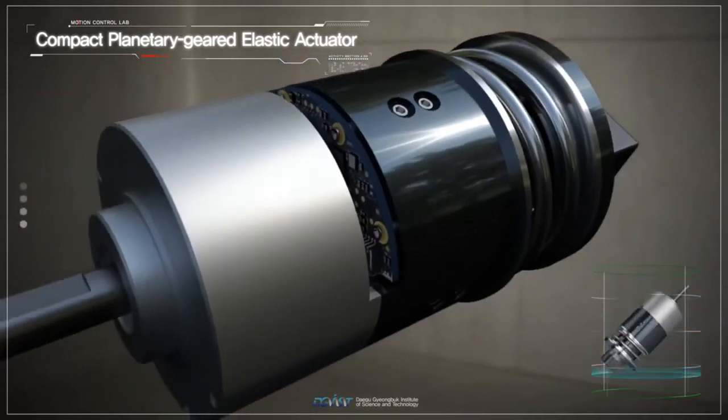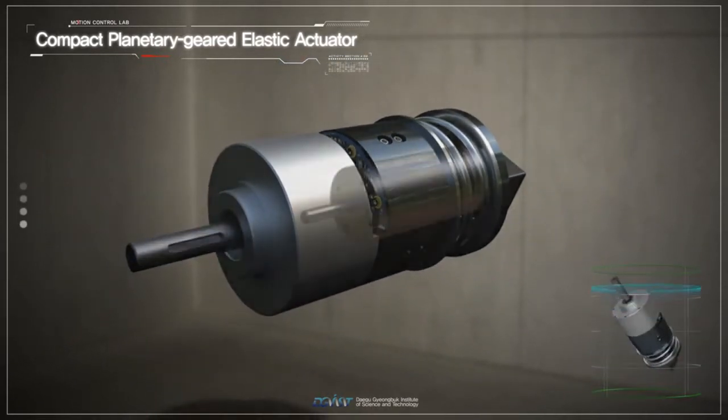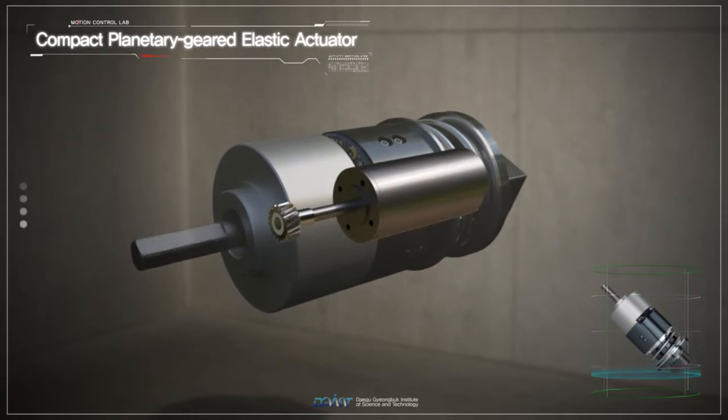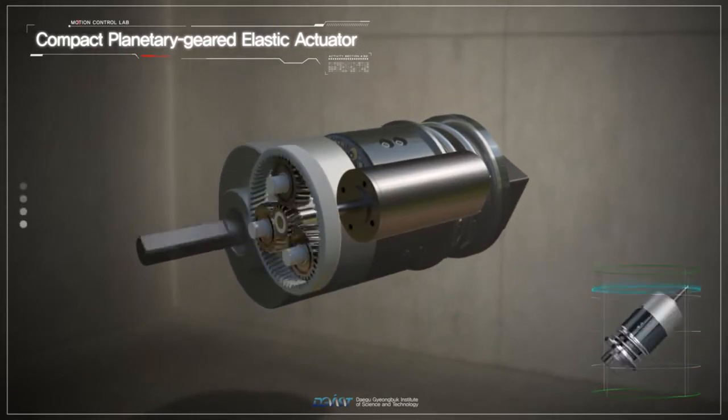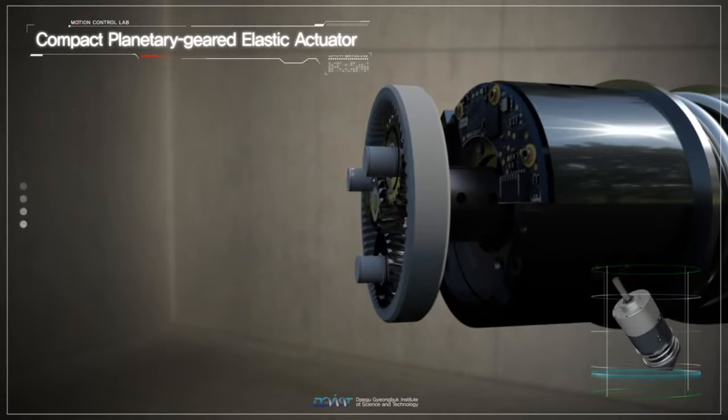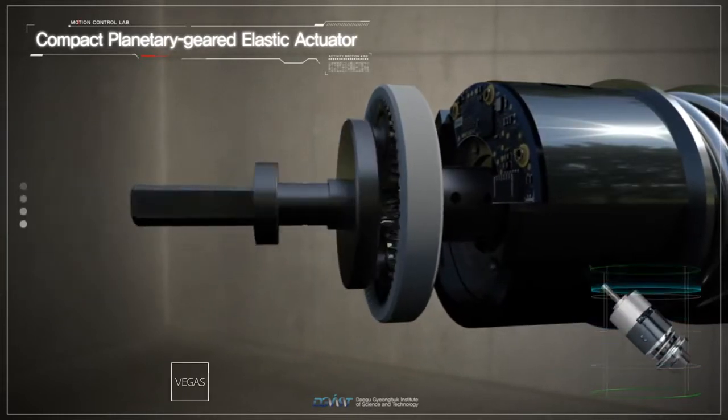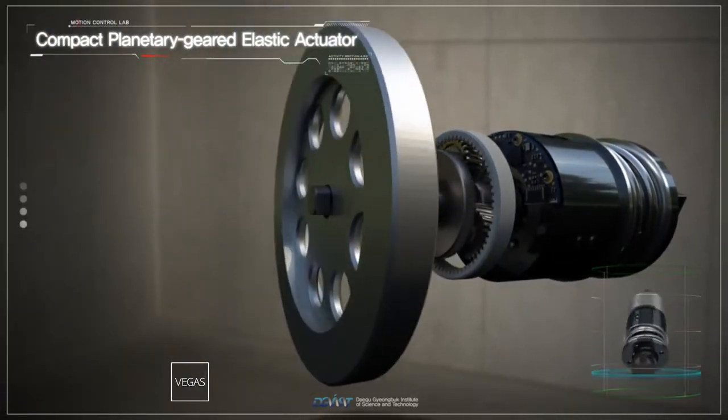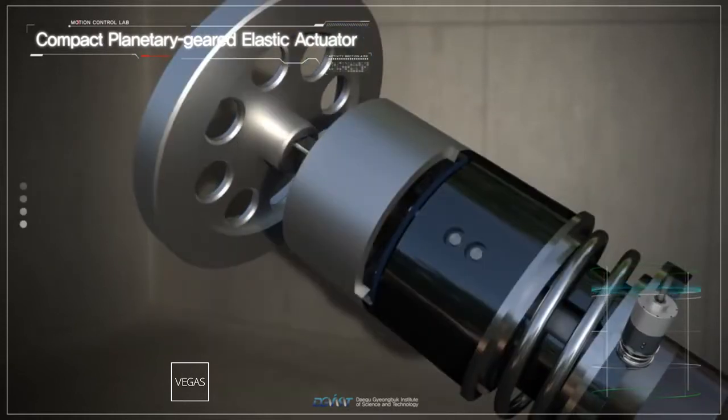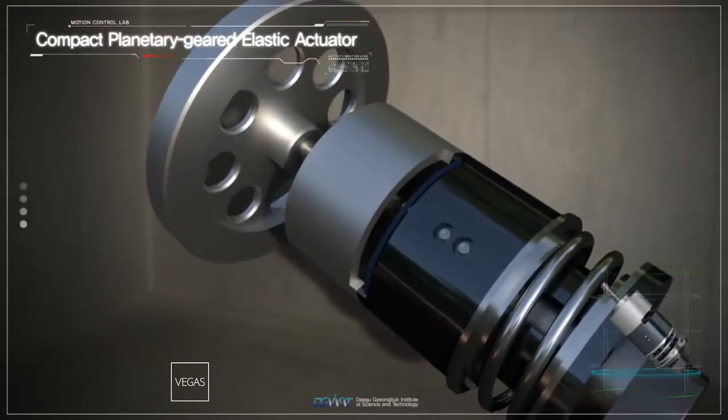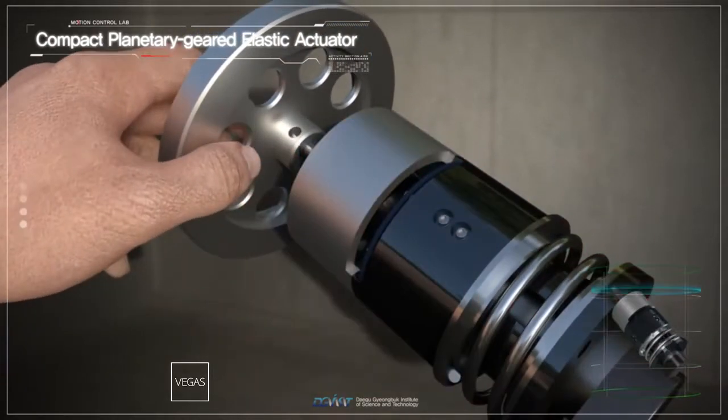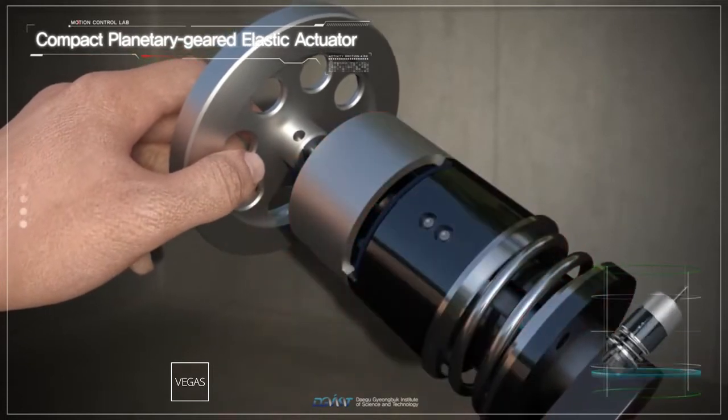Once power is supplied, the drive motor transfers rotational force to the sun gear and planetary gear in sequence, and power is transferred to an external device through the carrier that is connected to the planetary gear. Since the reduction gear is directly connected to the spring through the bracket to transfer stable rotational force,